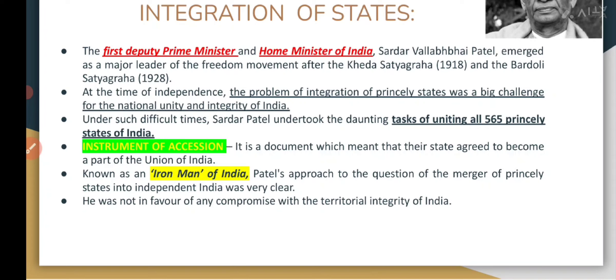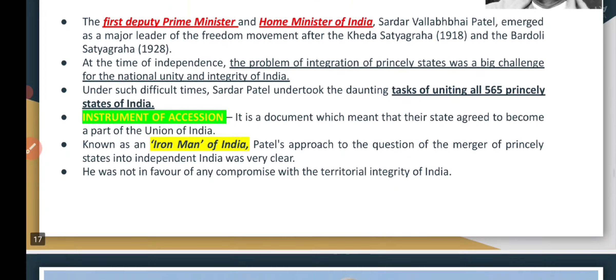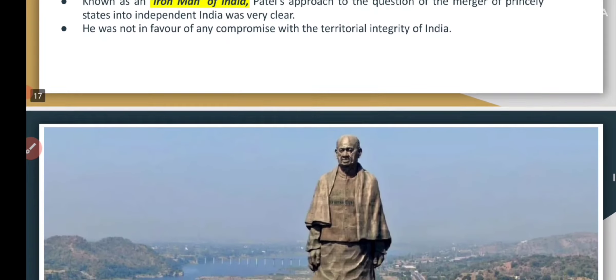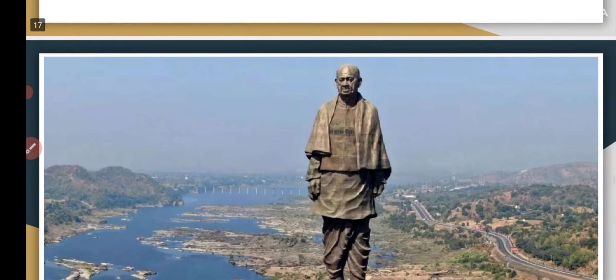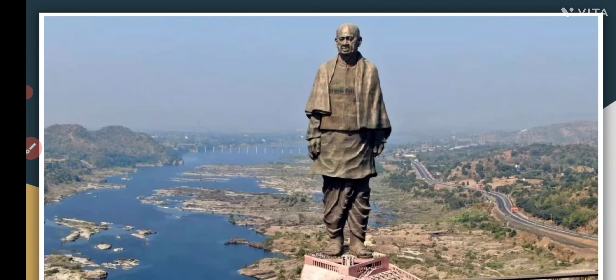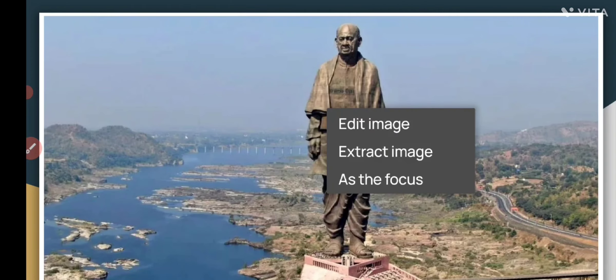Because he clearly merged all the princely states into India, and he said that in the matter of India's territorial integrity, no compromise would be made. This is the Statue of Unity, which is in Gujarat on the Narmada River — a salute to Sardar Vallabhbhai Patel.